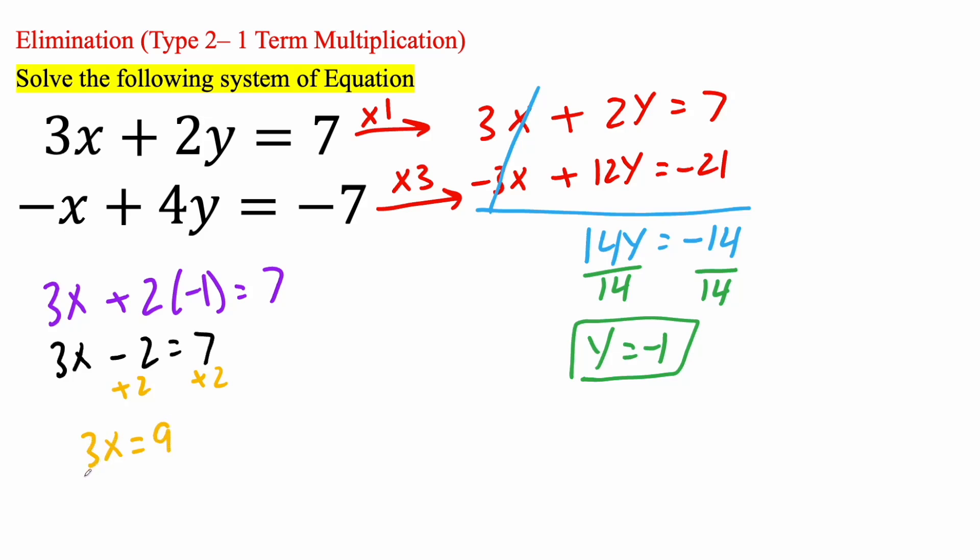And so 3x is equal to 9. So it's saying 3 times x. So I'm going to divide by 3, divide by 3. And so x is going to equal 3. So now we have x and y.